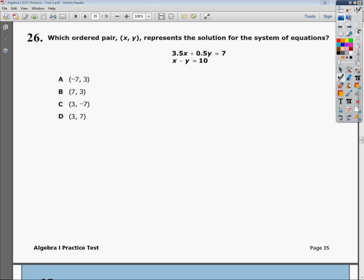For this system of equations, 3.5x plus 0.5y equals 7, and x minus y equals 10. Now there's a few ways that we can go about doing this. One of the quickest ways to do it is through graphing. In order to graph it in the calculator, I need to convert these into slope-intercept form, which means get y by itself.